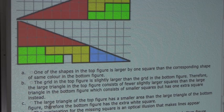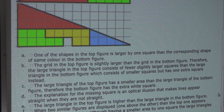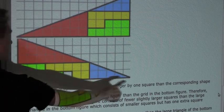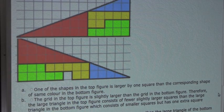Now option C: the large triangle of the top figure has a smaller area than the large triangle of the bottom figure, therefore the bottom figure has the extra white square. Well, this is false — we know that they have the same height, the same base, and therefore the same area. So option C is not a possible solution.